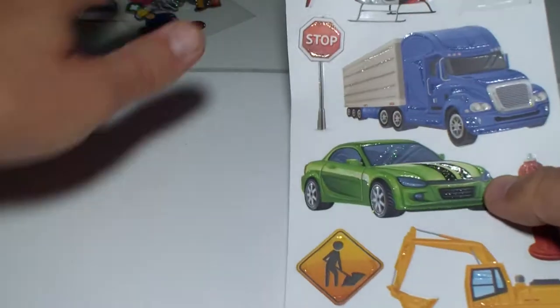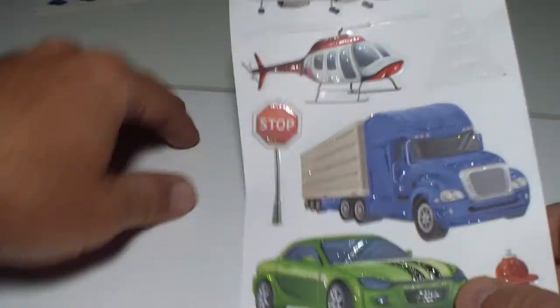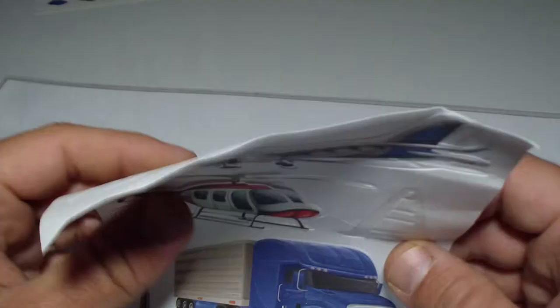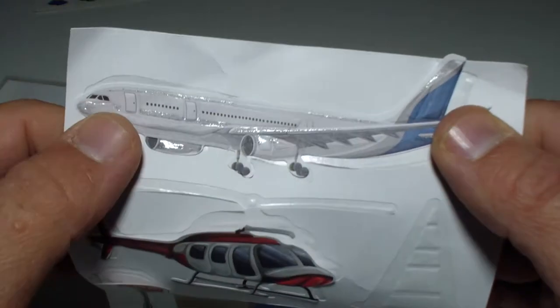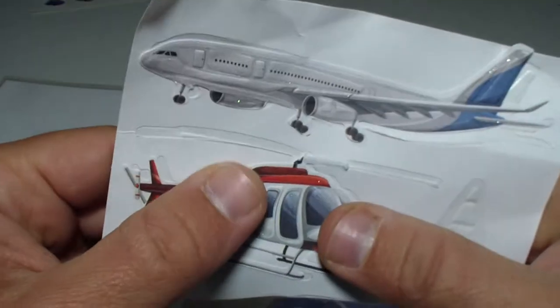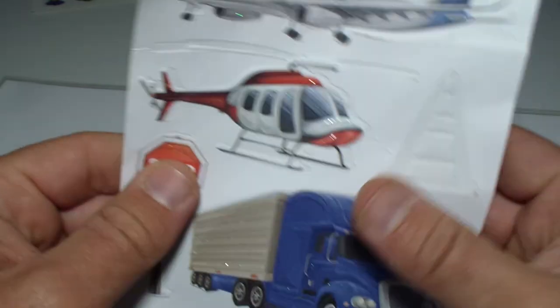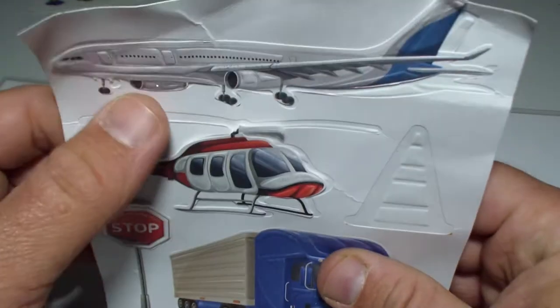Hey kids, we have this great pack of stickers of vehicles and transportation. Let's start with the airplane - see, a passenger airplane, that's a Boeing. And we have this red and white helicopter, and the propeller just fell down somehow.